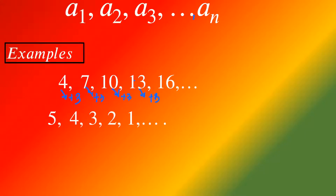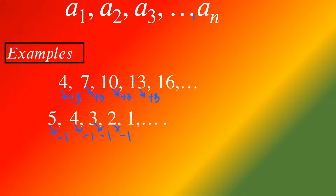Let's have another example: 5, 4, 3, 2, and 1. Can you spot the difference? If you notice, the sequence is decreasing — we subtract 1 from each term. So 5 minus 1 gives 4, 4 minus 1 gives 3, 3 minus 1 gives 2, and 2 minus 1 gives 1. The sequence continues up to aₙ.